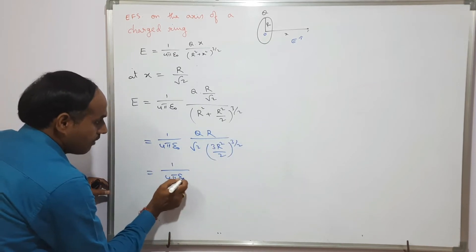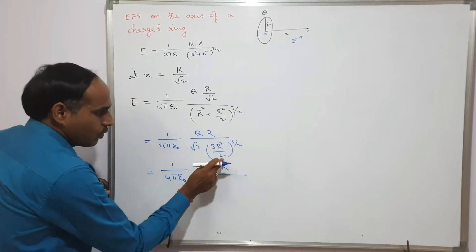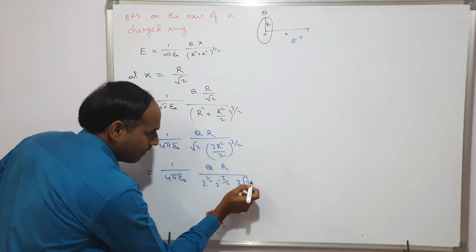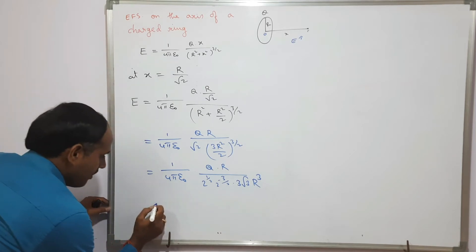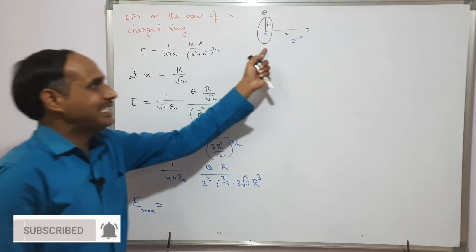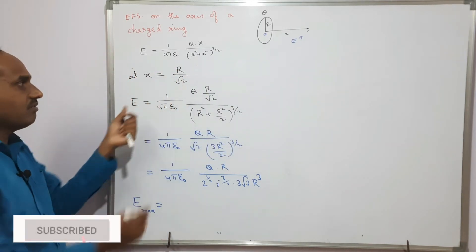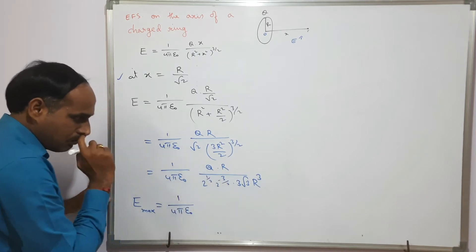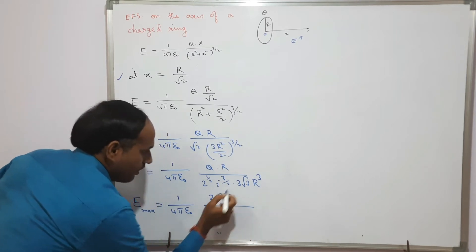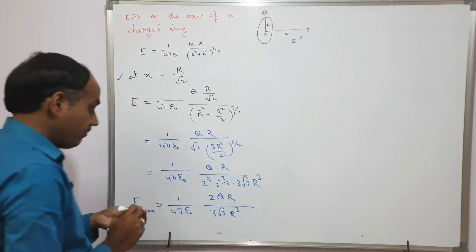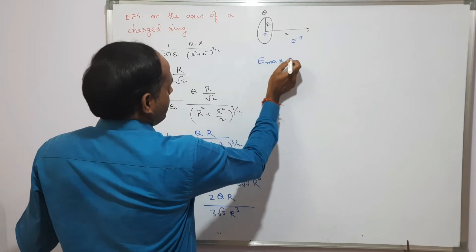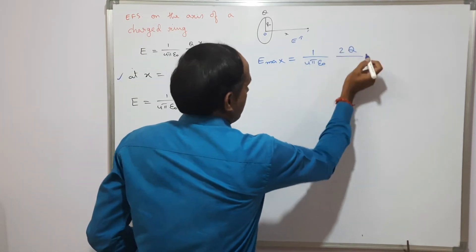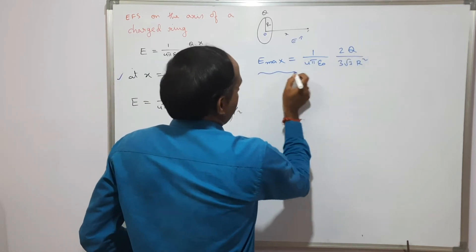Simplifying: (3r²/2)^(3/2) = (3/2)^(3/2) · r³ = 3√3·r³ / 2^(3/2). Combining the 2^(1/2) in the numerator with 2^(3/2) in the denominator gives 2^(−1) = 1/2. Therefore, the maximum value of electric field strength is E_max = (1/4πε) × 2q / (3√3·r²).